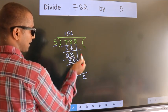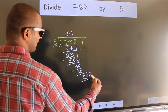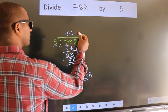No more numbers to bring down. So, we stop here. This is our remainder. This is our quotient.